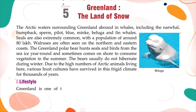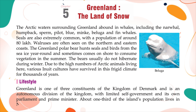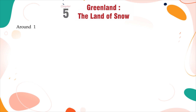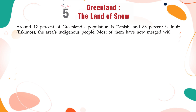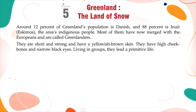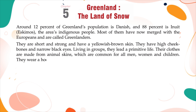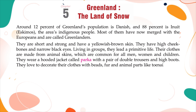Lifestyle: Greenland is one of three constituents of the Kingdom of Denmark and is an autonomous division with limited self-government and its own parliament and prime minister. About one-third of the island's population lives in Nuuk, the largest city and capital. Around 12% of Greenland's population is Danish and 88% is Inuit (Eskimos), the area's indigenous people. Most have now merged with Europeans and are called Greenlanders. They are short and strong, with yellowish-brown skin, high cheekbones, and narrow black eyes. Their clothes are made from animal skins. They wear a hooded jacket called a parka with double trousers and high boots, and love to decorate their clothes with beads, fur, and animal parts.